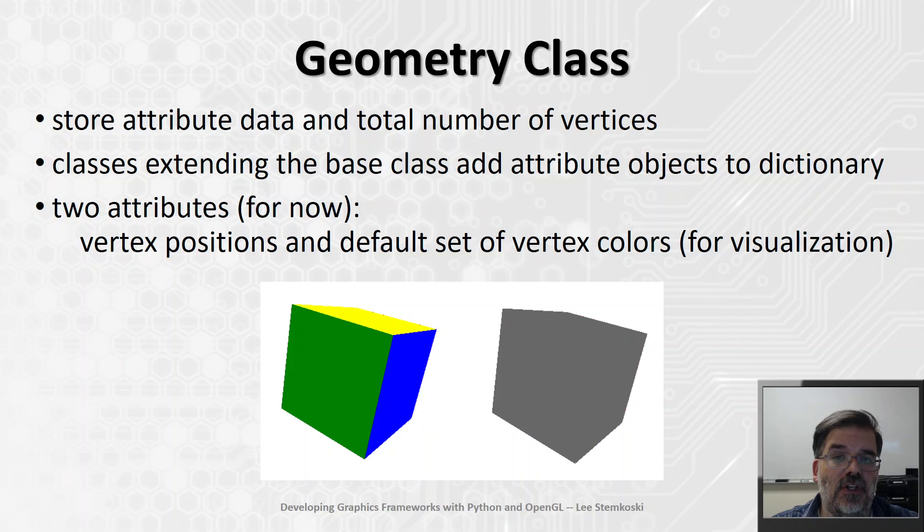In the geometry class, we need to store attribute data, all the different vertex buffer data that needs to define the shape of our object. And we'll also store the total number of vertices. And we can actually calculate that, that'll be the length of any data array stored in an attribute. The classes extending this base class will be responsible for adding the specific attribute objects to the dictionary.